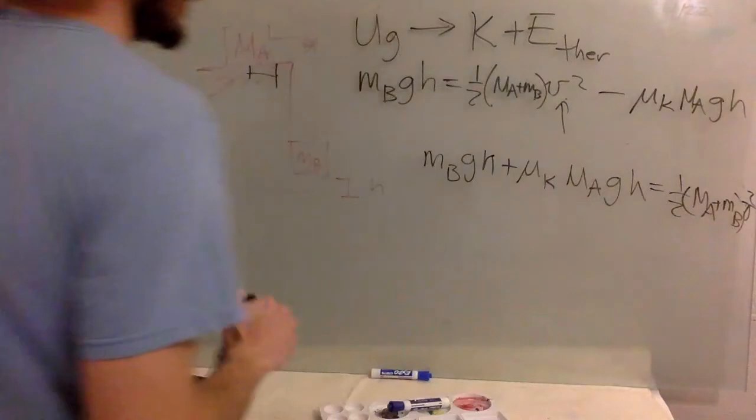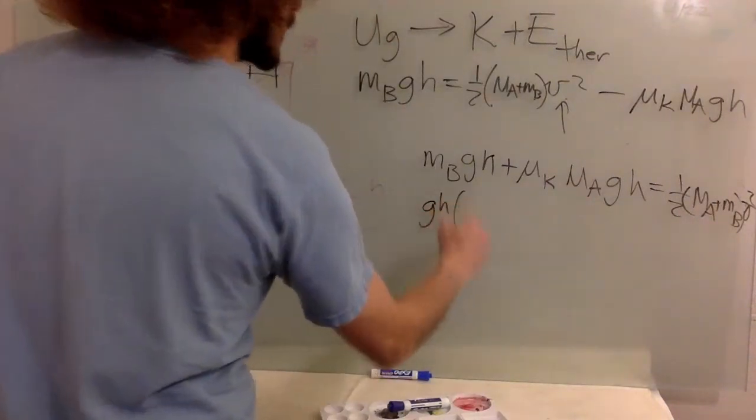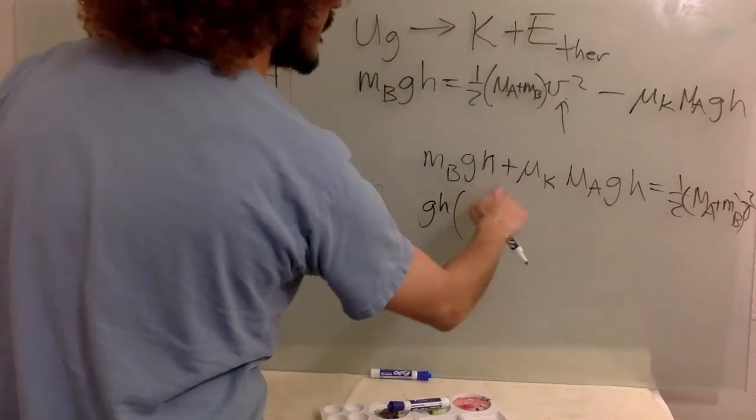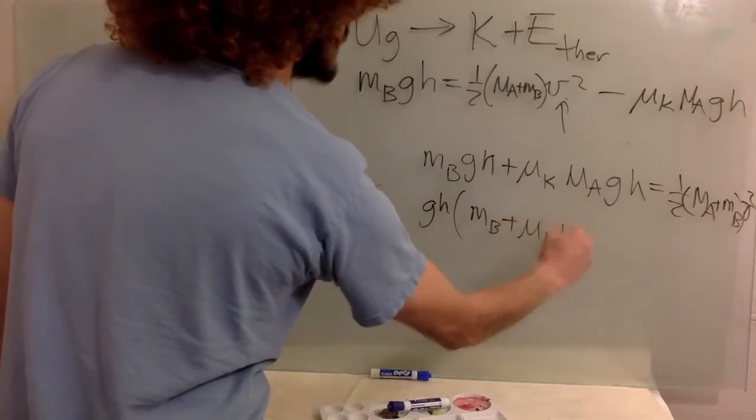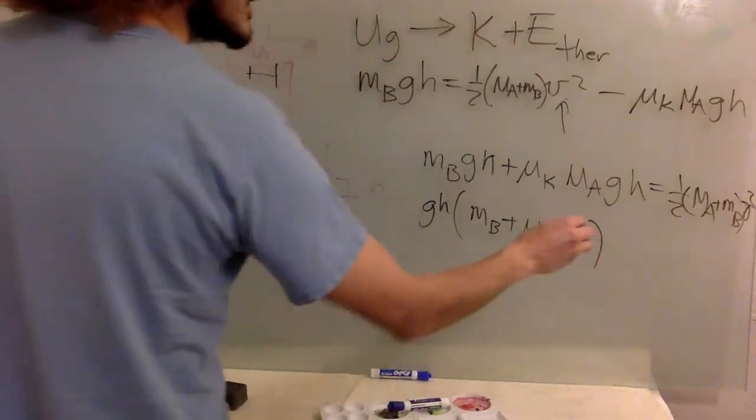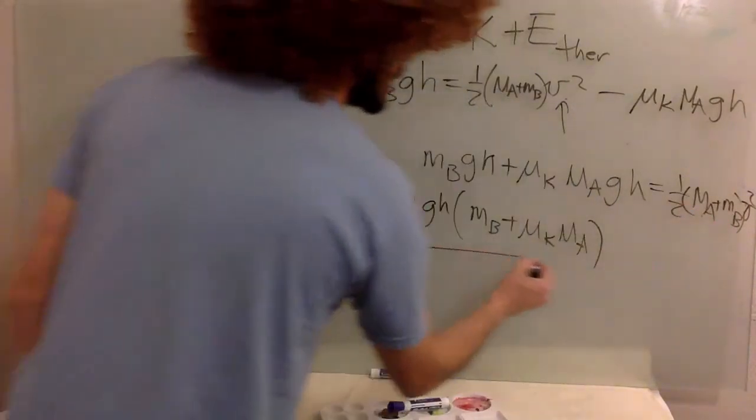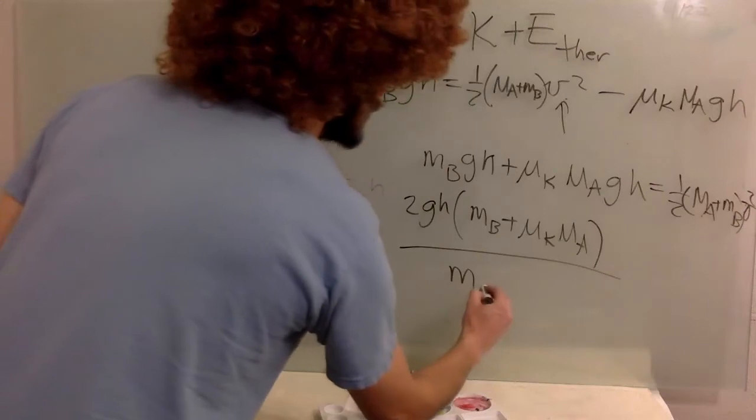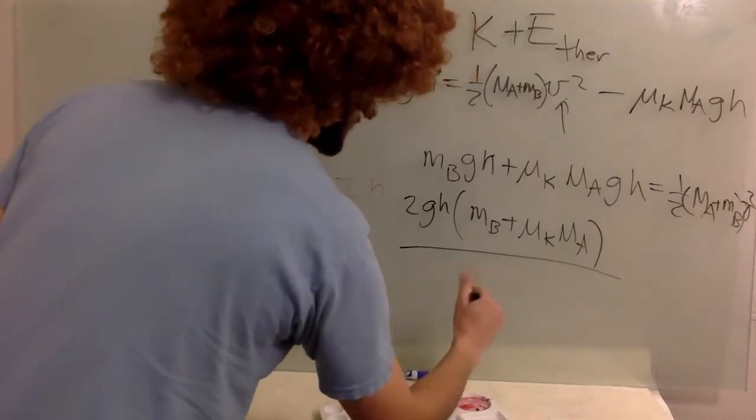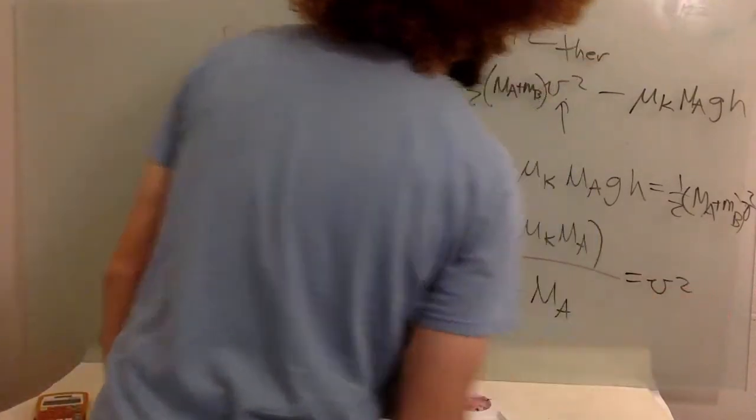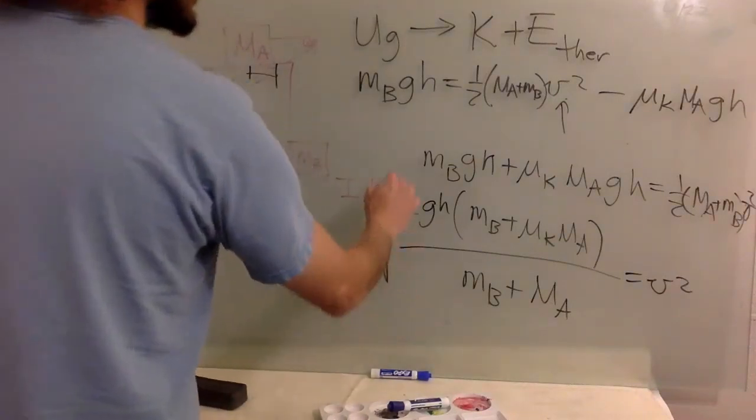Okay, so it's going to be MB g h plus mu K MA g h, we can factorize here, equals one half of MA plus MB squared V squared. Okay, so they'll crowd it over here, I'll fix it. So let's do the g h. And then this one is going to be MB plus mu K MA. These two, we can put it over here, 2 g h, and we can divide the whole thing by MA, this will be the big one. Let's put it in the same order, just because it looks pretty. MB plus MA. That's your V squared, and you have to take the square root of this, and then you get your velocity.